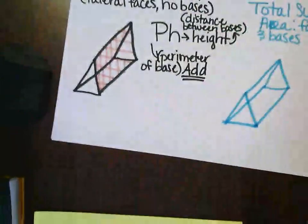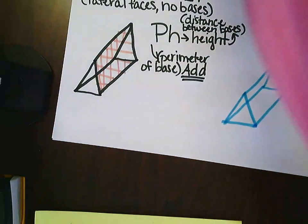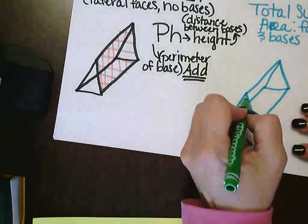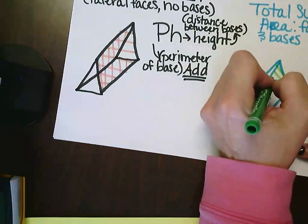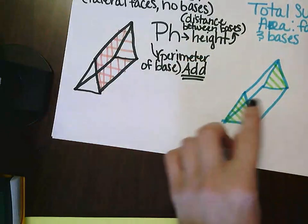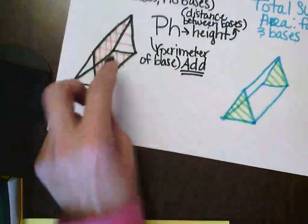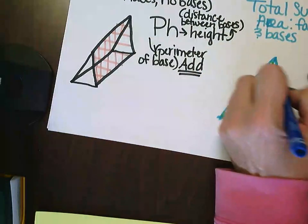Faces and bases. Let's draw this triangular prism. If we're talking about the total surface area, we're talking about the triangles—our bases, right? So we can color those in, and then the lateral area over here we would color in as well, because it's everything, everything.